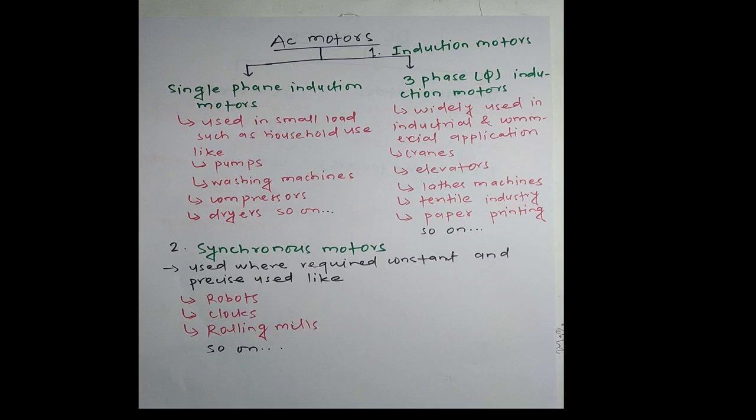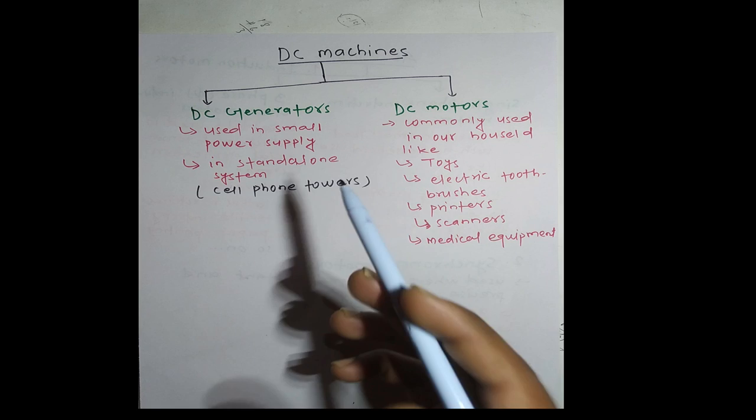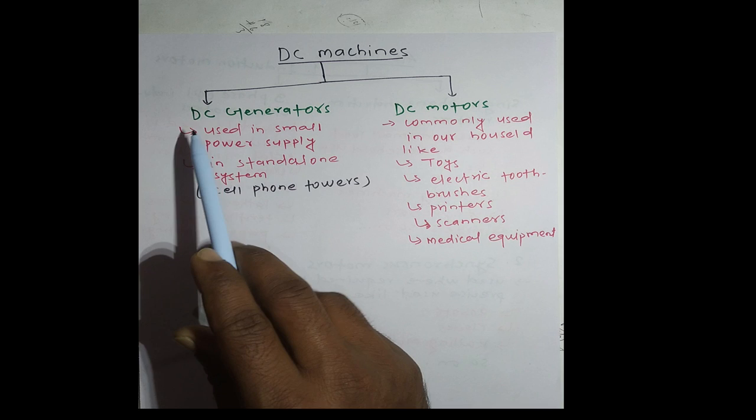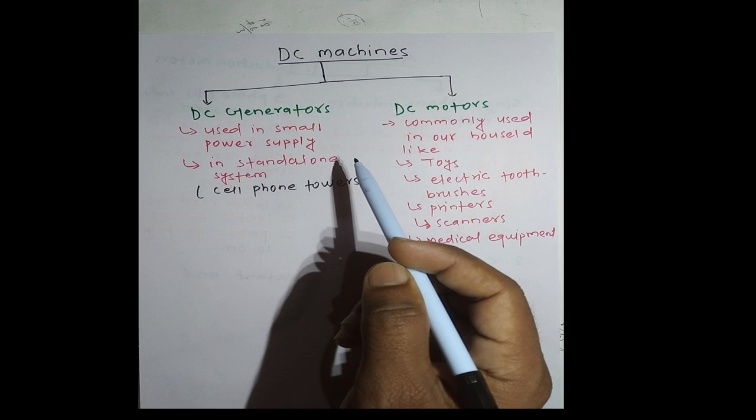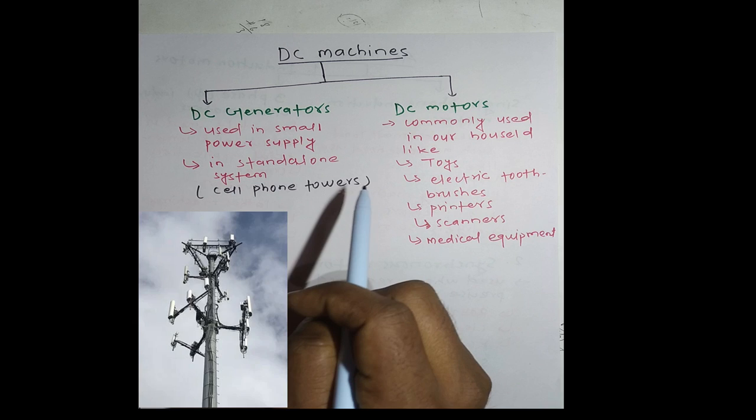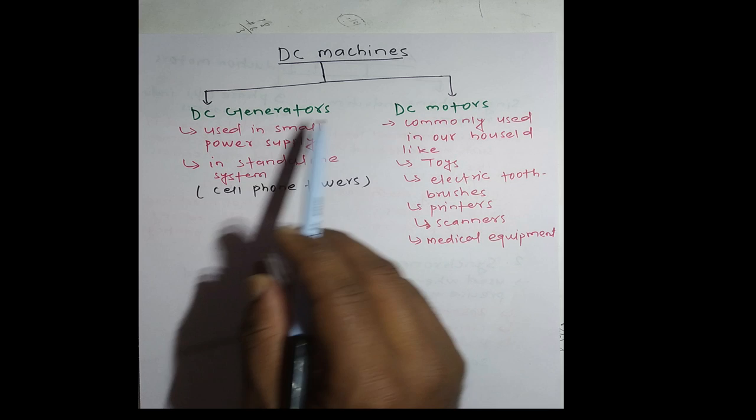Not only AC machines are used widely, but DC machines have the same importance. In DC machines, we can study DC generators and DC motors. What are the uses of DC generators? Used in small power supply in standalone systems—standalone system means cell phone networks, cell phone towers. In cell phone towers, we can see uses of DC generators.